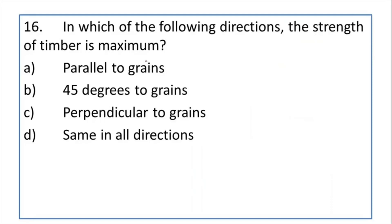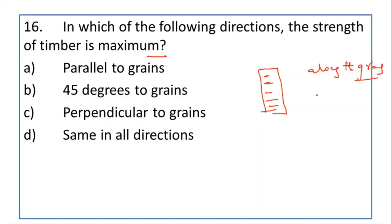In which direction is the strength of timber maximum? Timber consists of grains, and the strength is maximum along — that is, parallel to — the grains. That is why sawing is always done parallel to the grains, to obtain timber with the highest strength. So the answer is: parallel to the grains. This concludes the questions on timber.